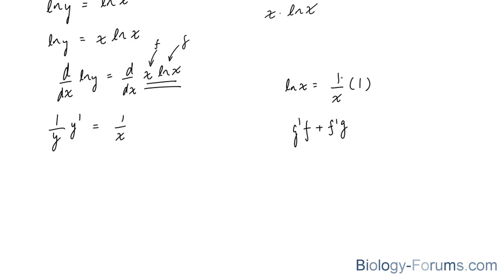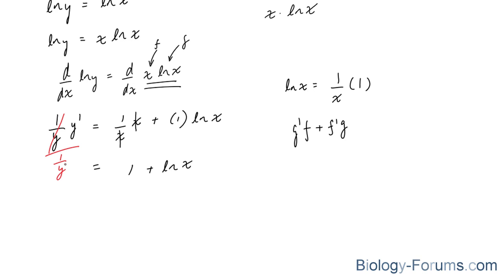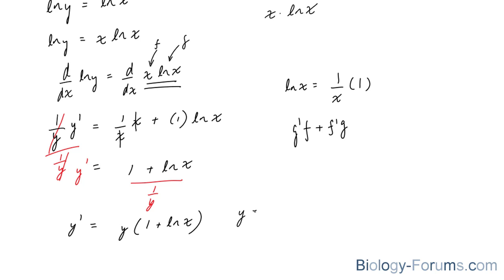We'll multiply it by this x, and then we add the derivative of x, which is 1, and ln x the way it is. The two x's will cancel out, leaving you with 1 plus ln x. On the left side, we'll isolate for y prime by dividing each side by 1 over y. You end up with y times 1 plus ln x equals y prime. And remember, y is equal to x to the power of x. So your final answer is x to the power of x times (1 plus ln x).